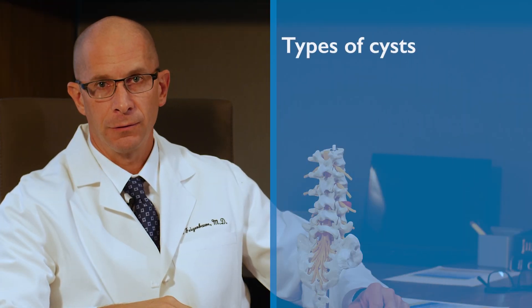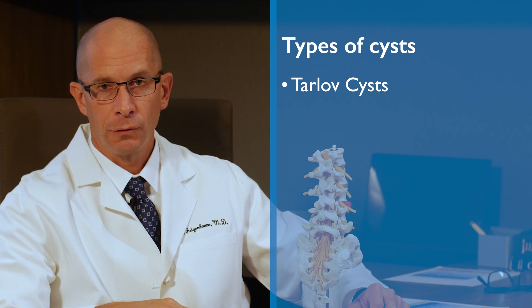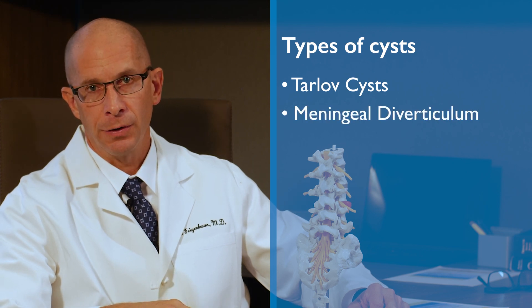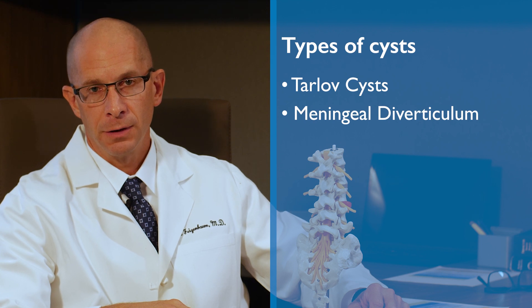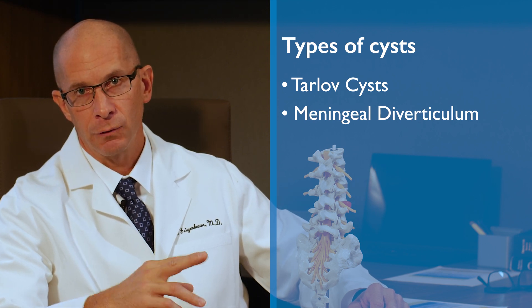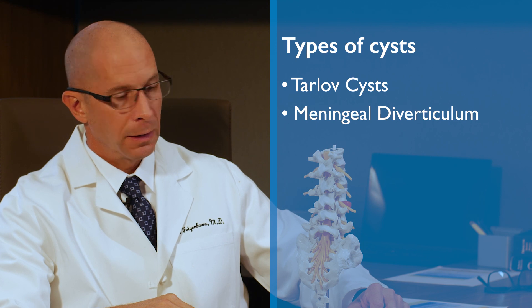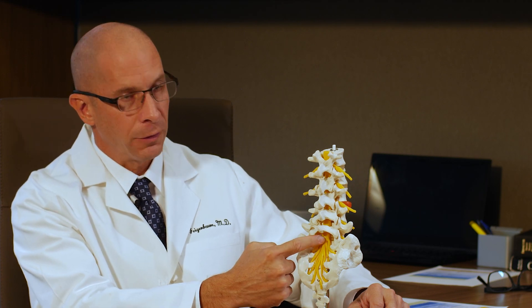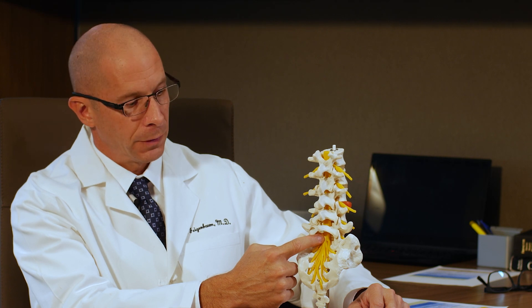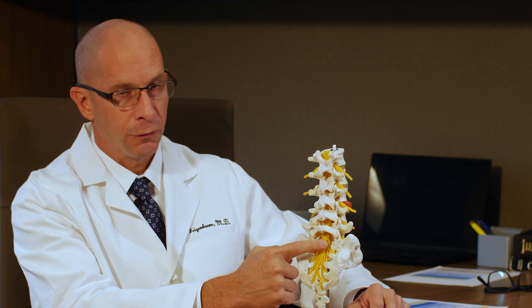There are multiple other types of Spinal Meningeal Cysts. Tarlov Cysts are the most common. The next most common would be something called an Intrasacral Meningeal Cyst, also known as a Meningeal Diverticulum — the names are synonymous. Unlike Tarlov Cysts, which arise from one of the nerve roots, an Intrasacral Meningeal or Meningeal Diverticulum arises directly from the Spinal Sac itself. So an Intrasacral Meningeal is kind of an extension of the Spinal Sac, whereas Tarlov Cysts arise from nerves after the nerves have exited the Spinal Sac.